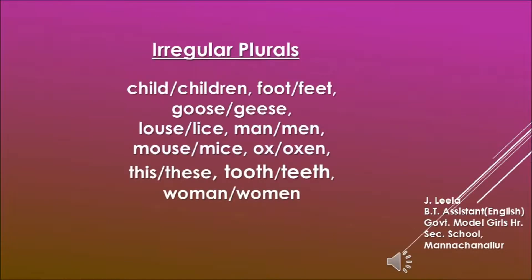Students, here is the list of irregular plurals for you. I want you to read them carefully and learn them by heart. The plural for child is children — remember, it is not childrens. The plural of foot is feet. Tooth is teeth. Mouse is mice. This becomes these. Also remember, the plural of woman is women, spelt W-O-M-E-N and pronounced as women. It is the same with man and men.